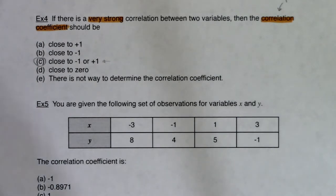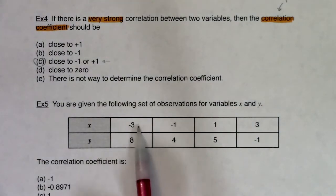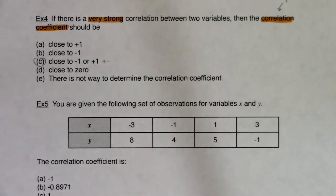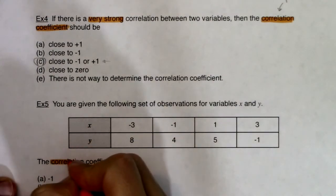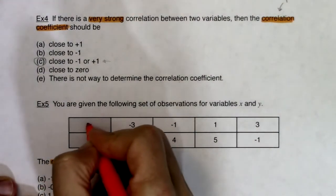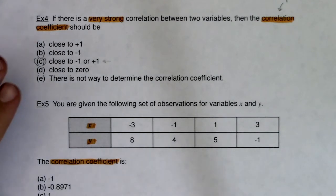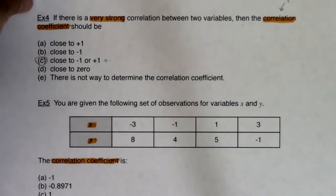In example 5, you are given the following set of observations for variables x and y. I can see I have a numerical variable and another numerical variable. So again, I'm dealing with two numerical variables, and it's asking me for the correlation coefficient — the r value. I'm going to plug these into my calculator and run stat calc 8, which will tell me what my correlation coefficient is.